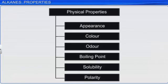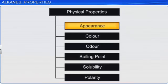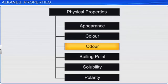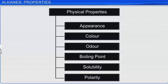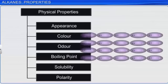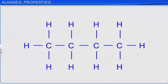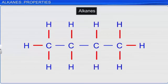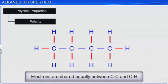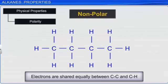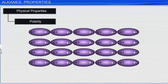First, let's look at the physical properties of alkanes. These include appearance, color, odor, boiling point, solubility, and polarity, among others. These properties depend on the attractive forces working on the molecules. Alkanes consist of only carbon-to-carbon and carbon-to-hydrogen single bonds. These bonds are covalent, and the electronegativity difference between two carbon atoms or between carbon and hydrogen is almost negligible. Hence, the molecules formed are non-polar, and the only attractive force acting on these molecules is the weak van der Waals force.